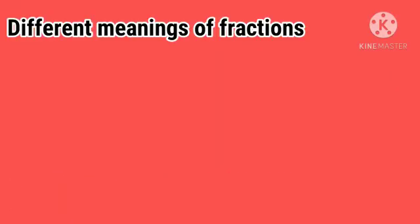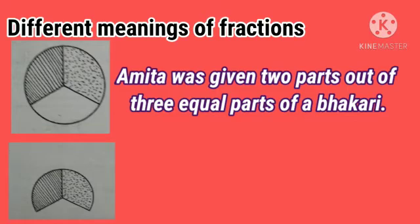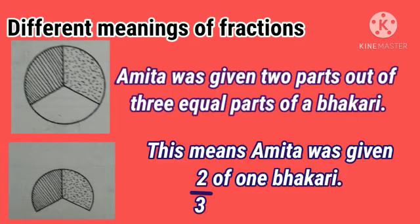Now, different meanings of fractions. See in the picture here — Amita was given two parts out of the three equal parts of a Bhakri. The Bhakri is divided into three parts, and from these three parts, two parts were given to Amita. This means Amita was given two upon three of one Bhakri.